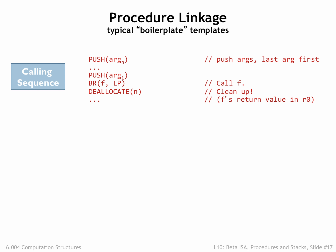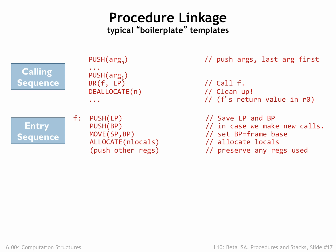We saw the code template for procedure calls on an earlier slide. Here's the template for the entry point to a procedure F. The code saves the caller's LP and BP values, initializes BP for the current stack frame, and allocates words on the stack to hold any local variable values. The final step is to push the value of any registers besides R0 that will be used by the remainder of the procedure's code.